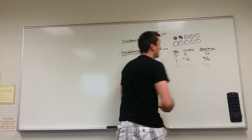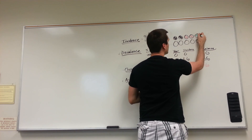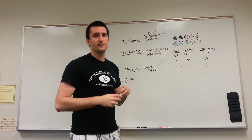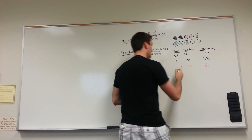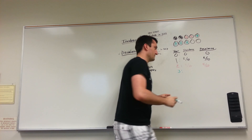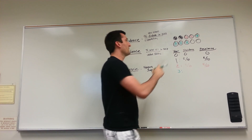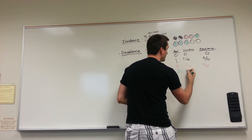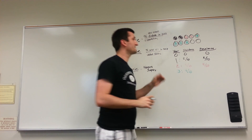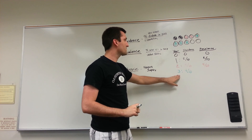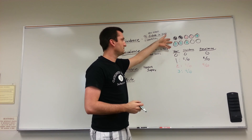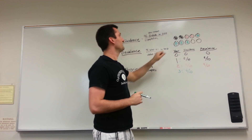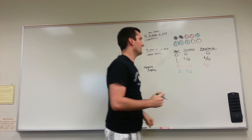Year three was a bad year — four people got herpes. What's the incidence? This year, four new cases: 4 out of 10. What's the prevalence in year three? We have to count all prior years plus this year, so it would be 8 out of 10.